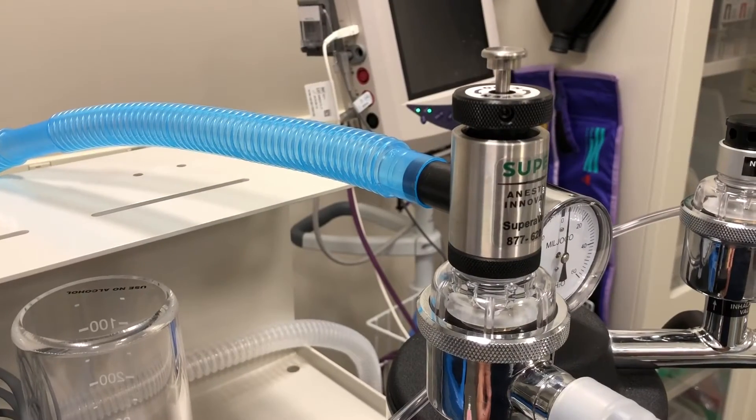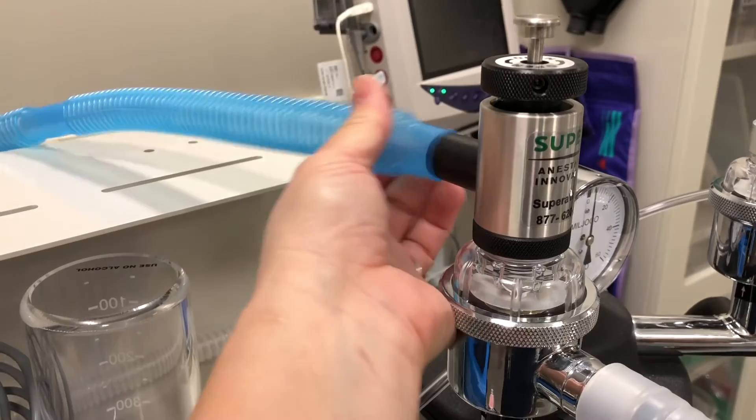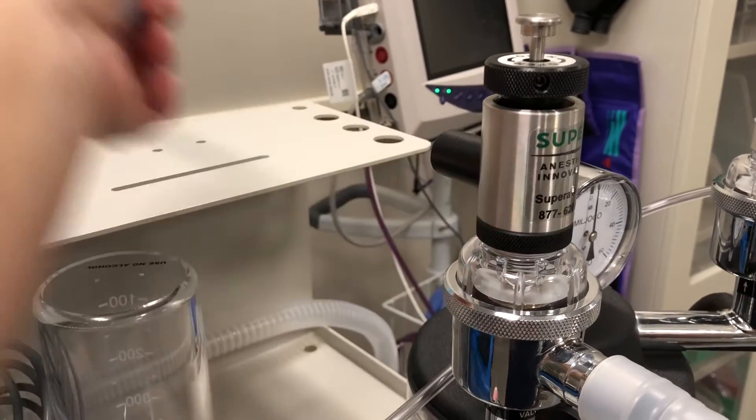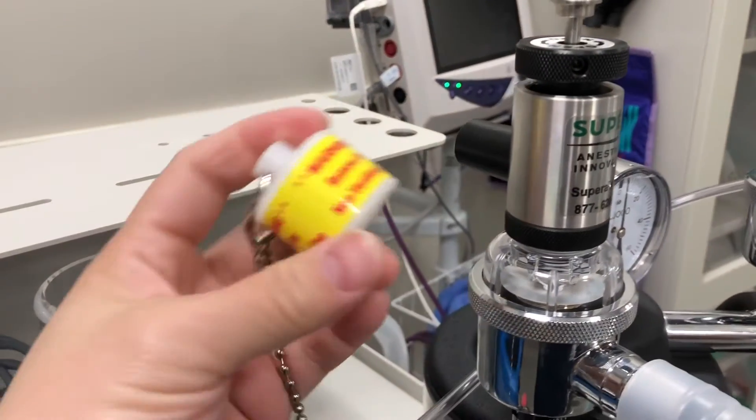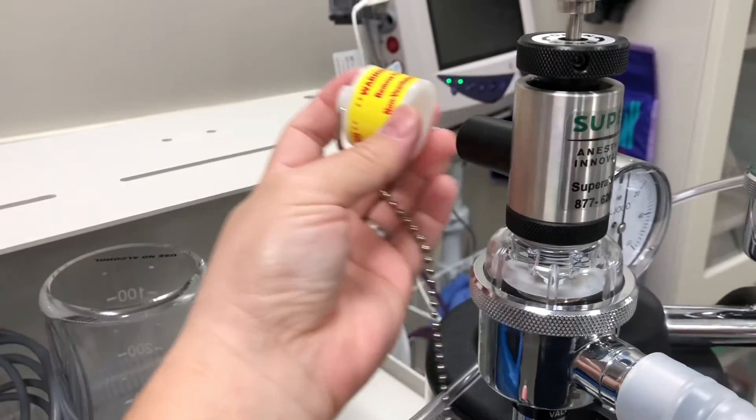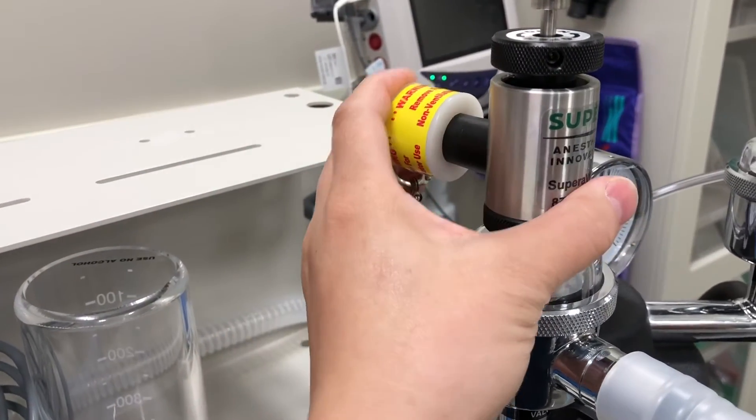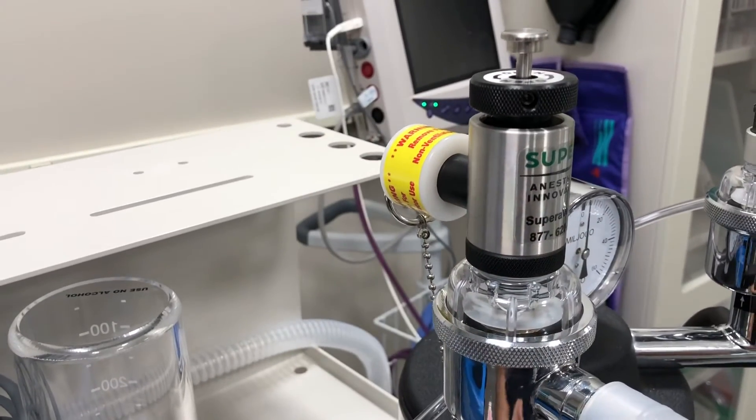To close the pop-off for ventilator use, remove the scavenge tubing from the back of the Supira valve and place to the back of the ventilator like normal. Take your occlusion cap and place it on the back of the Supira valve. That's going to close your pop-off.